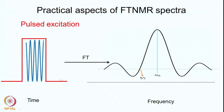Now let us turn to some practical aspects of FT NMR spectra. Pulse excitation generates a whole range of frequencies in one go, achieved by applying the RF for a very short period of time — on the order of a few microseconds. If the width of this pulse is tau, it will excite frequencies according to a particular excitation profile. This is the excitation profile of the RF pulse — these are Fourier related — and a whole range of frequencies are excited with different amplitudes.